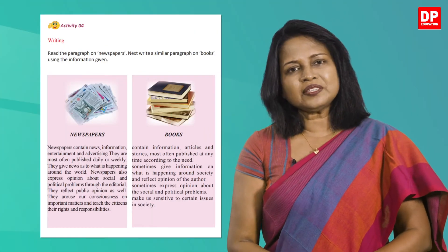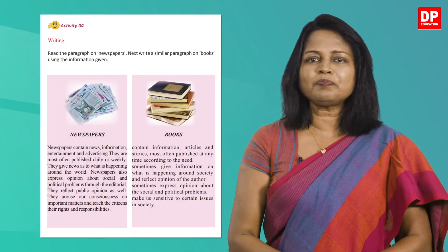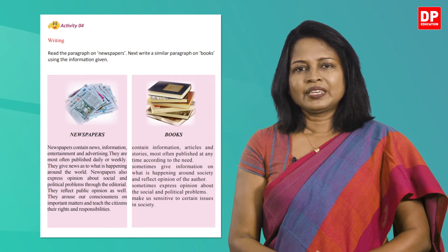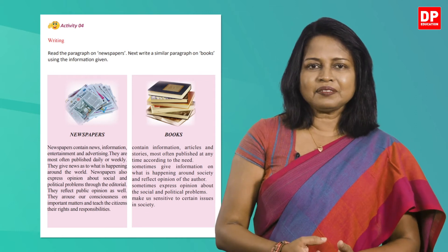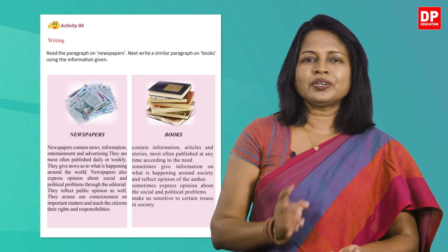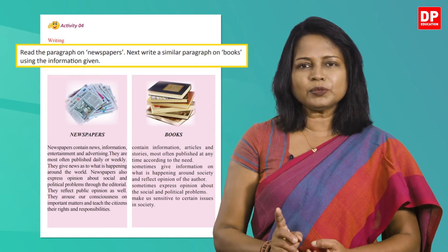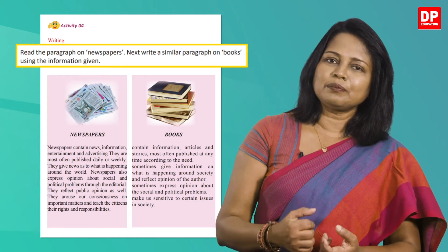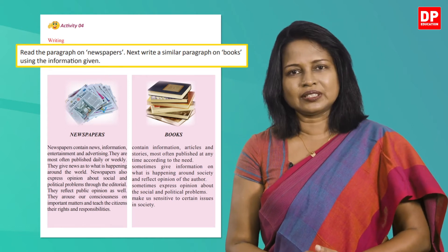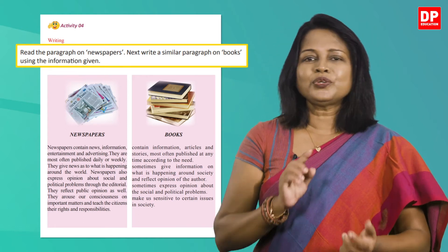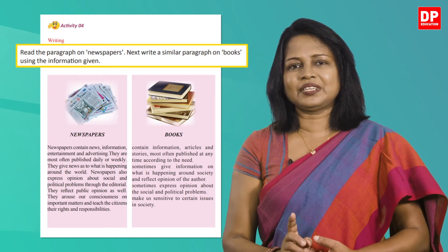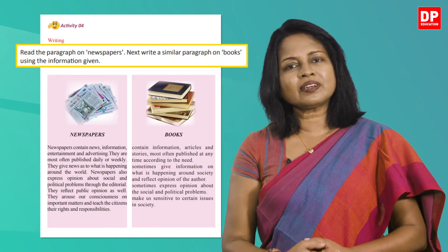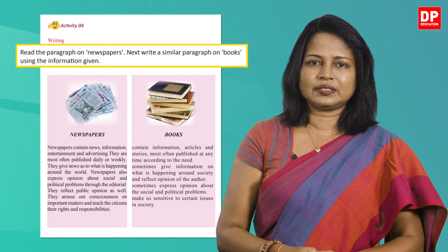Let's do activity 4 on page 55 of your textbook. In this activity you have to read the paragraph on newspapers and write a similar paragraph on books, using the information given. Let's read the paragraph on newspapers first.